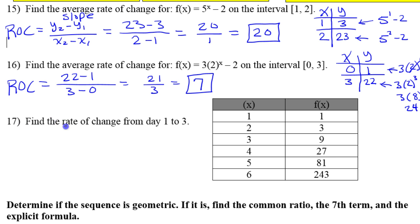And finally, for number 17, I just plain gave you a table of values. This is an exponential function. You can see everything is tripling. 1 times 3 is 3. Times 3 is 9. Times 3 is 27. Times 3. So this is exponential.